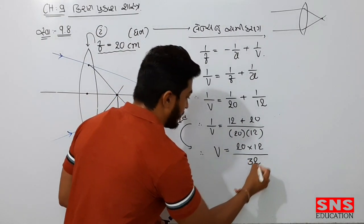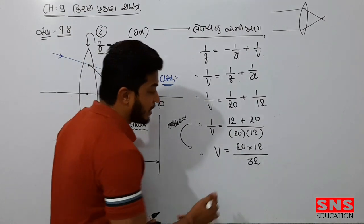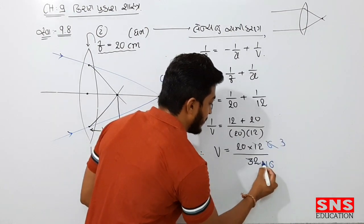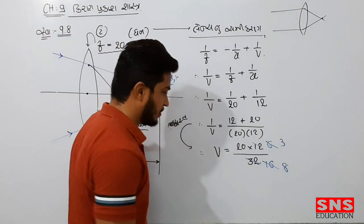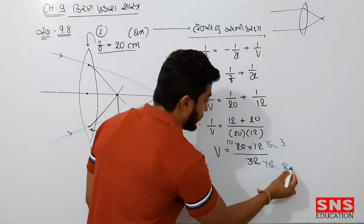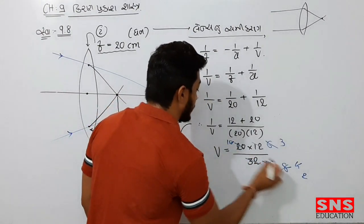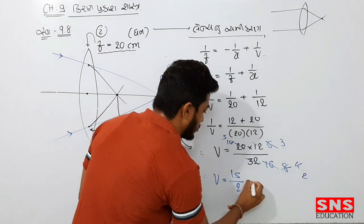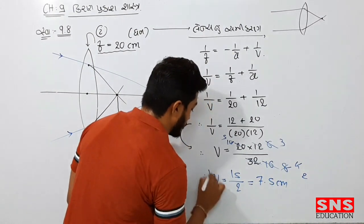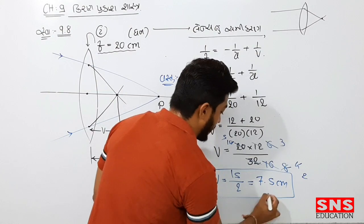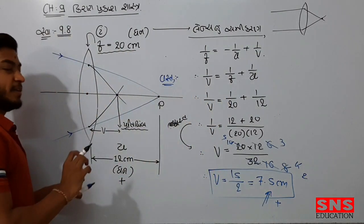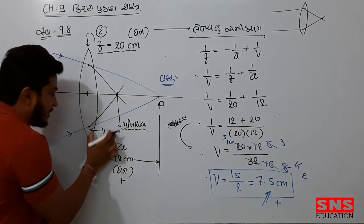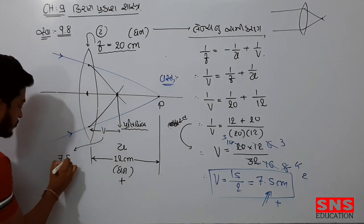So that gives 32. Clear — so 1/v is equal to 5. Therefore v comes out to 7.5 cm, which is positive. The answer is positive. So the simple meaning is definitely: the distance is positive, and the distance is 7.5 cm.